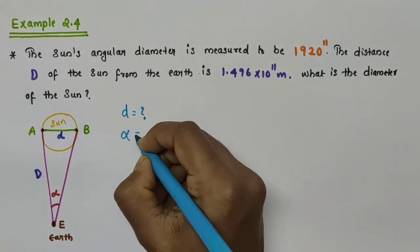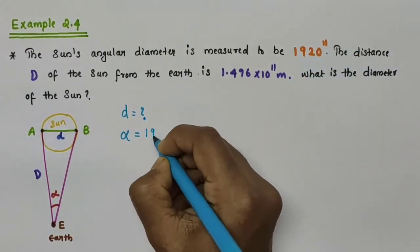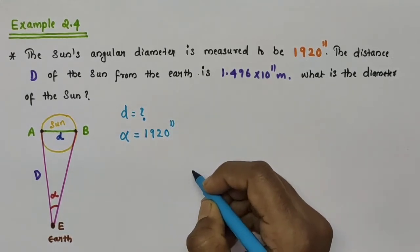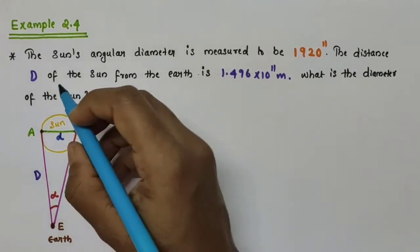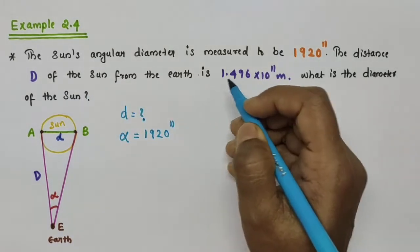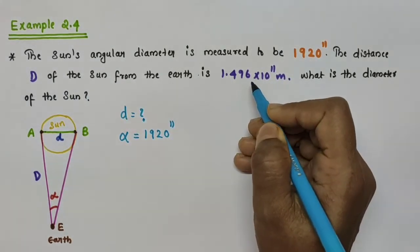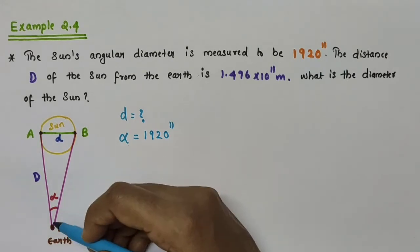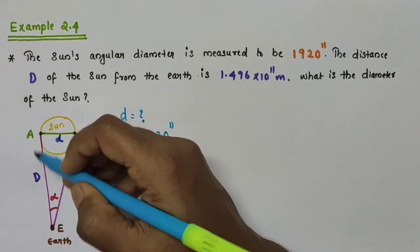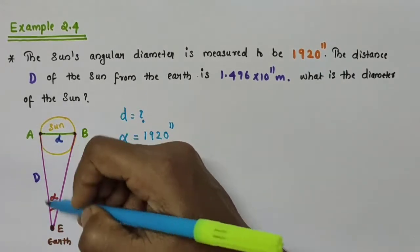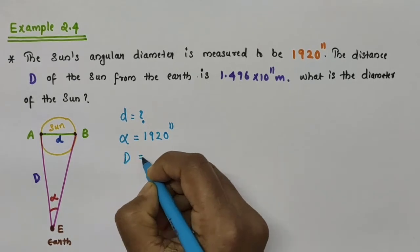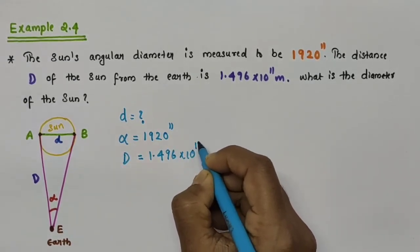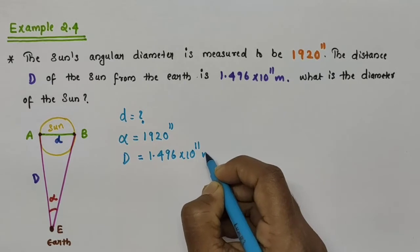Now, this angle alpha is the angular diameter of the sun, and it is given as 1920 arc seconds. The distance D of the sun from the earth — that is the distance from the earth to the sun — is given as 1.496 × 10¹¹ meters.